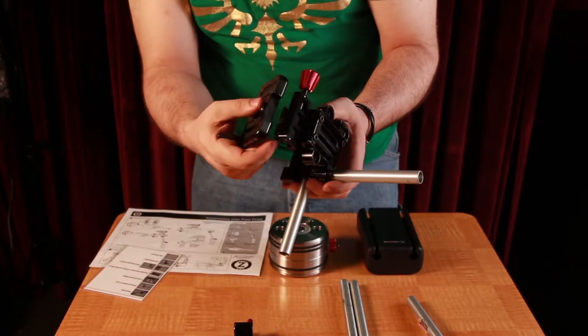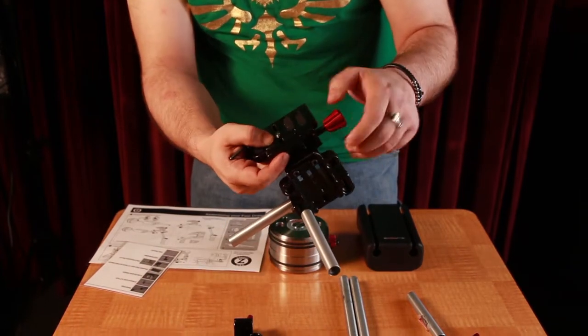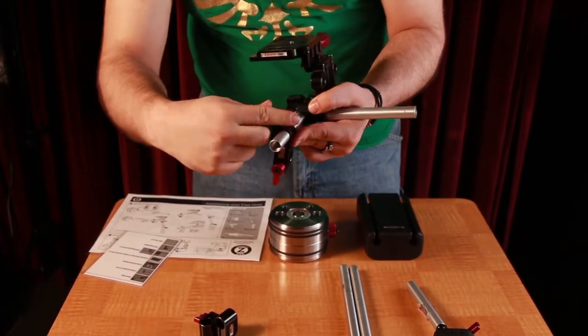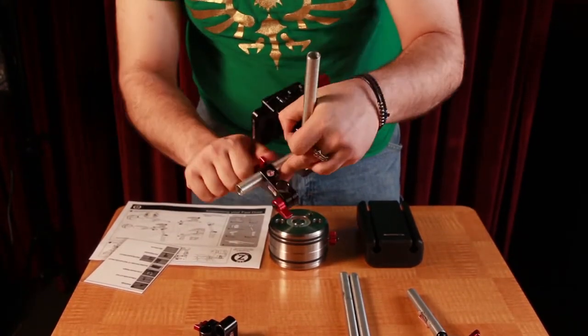Next, take the DSLR base plate, place it on top, and screw with the red knob. Next, take the Z mount with the two tightening knobs and slide it onto this rod and tighten.